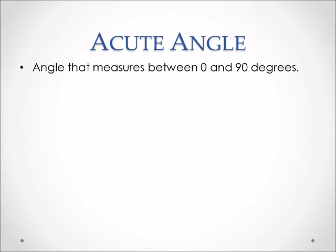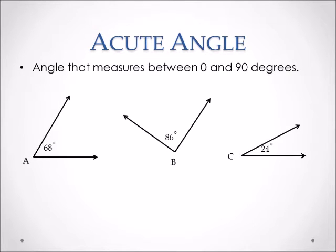Acute angles measure between 0 and 90 degrees, so they are very small. These are some examples of acute angles. We have angle A, which is 68 degrees, angle B, which is 86 degrees, and angle C, which is 24 degrees. As you can tell, all of these angles are between 0 and 90 degrees, making them acute angles.